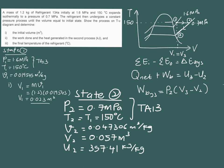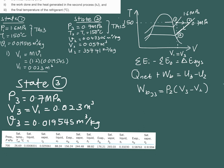In state 2 we also need the internal energy U2 in order to solve the heat generated problem. We continue with state 3, because we need V3 to solve for the work boundary and U3 to solve for Q_net. In state 3, the pressure is 0.7 MPa and V3 equals V1, so the specific volume at state 3 is 0.019545 m³/kg. We take this V3 value and put it into the equation to solve for the work boundary.